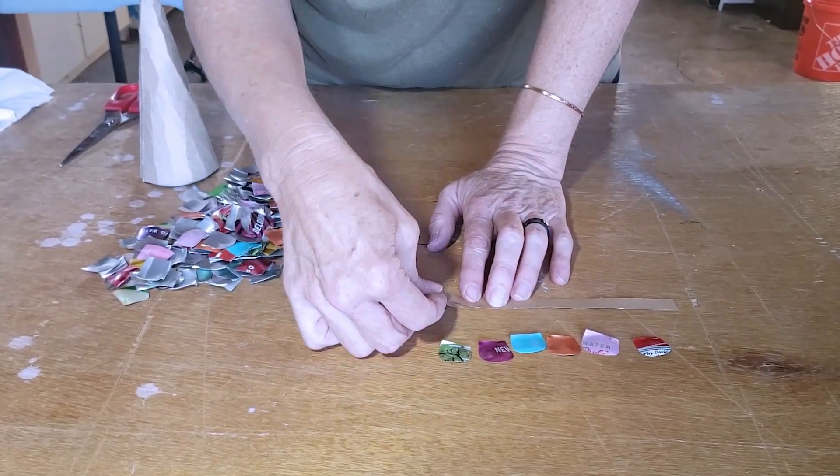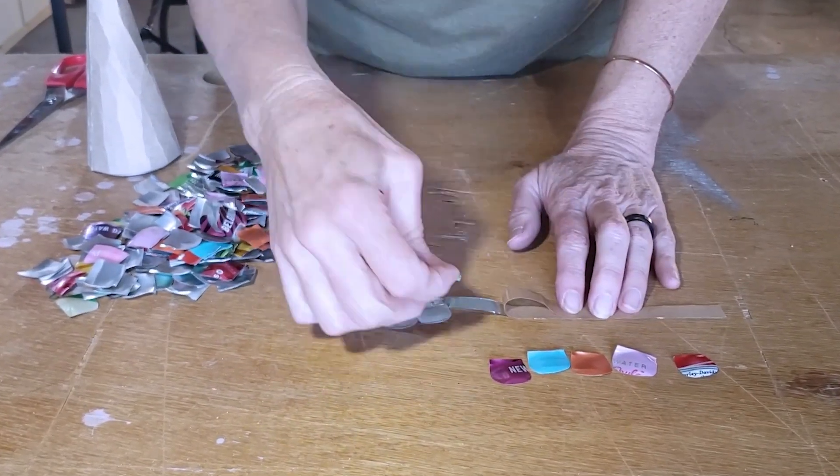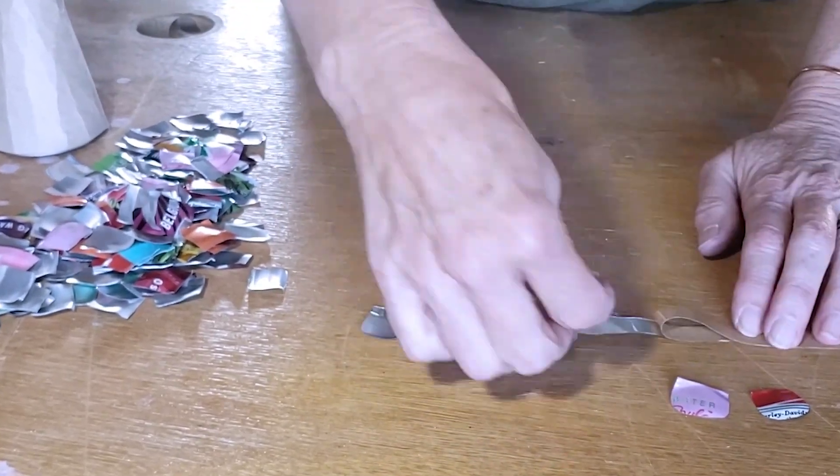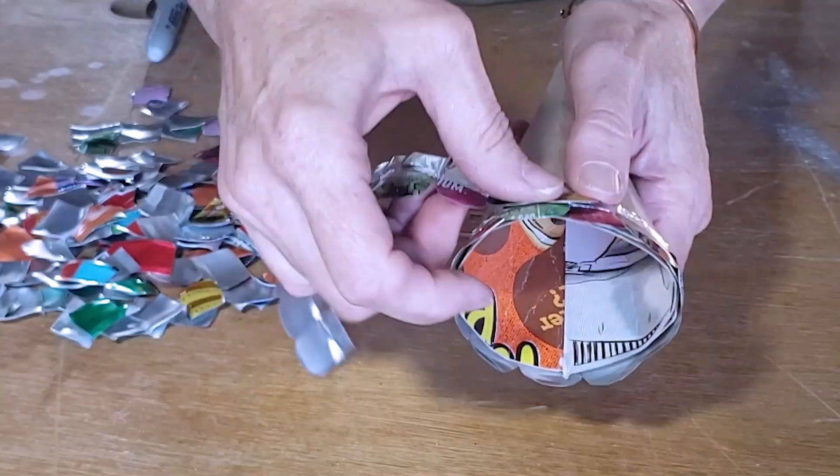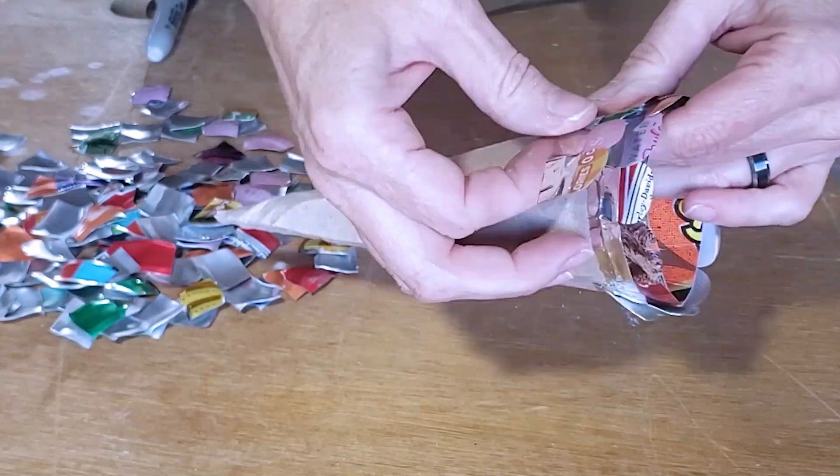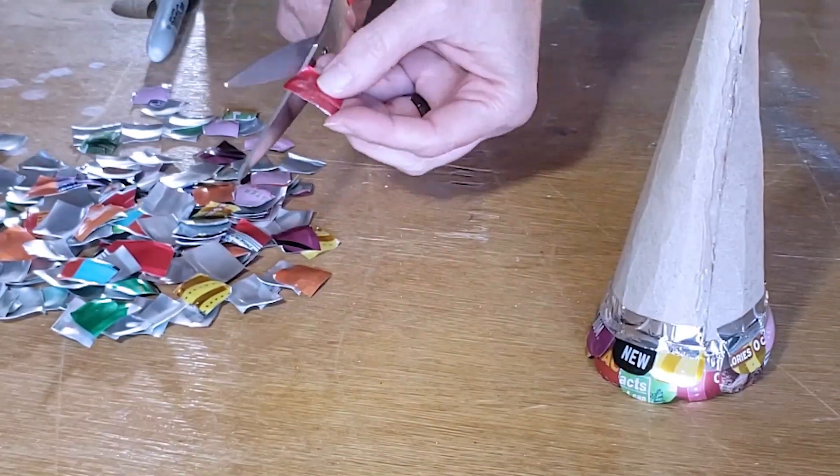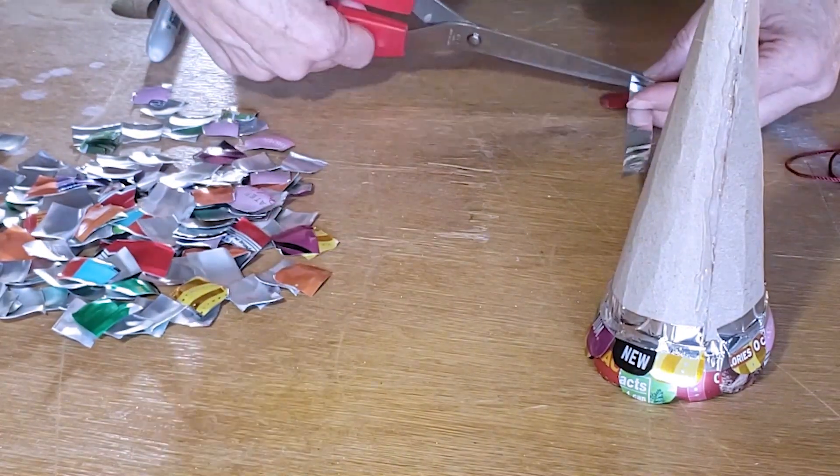The next step is to attach the metal pieces to the cone and I use metal tape for a lot of my aluminum projects so I just cut strips of the aluminum tape and I started at the bottom of the cone and worked my way toward the top covering the tape with the metal pieces as I went along.